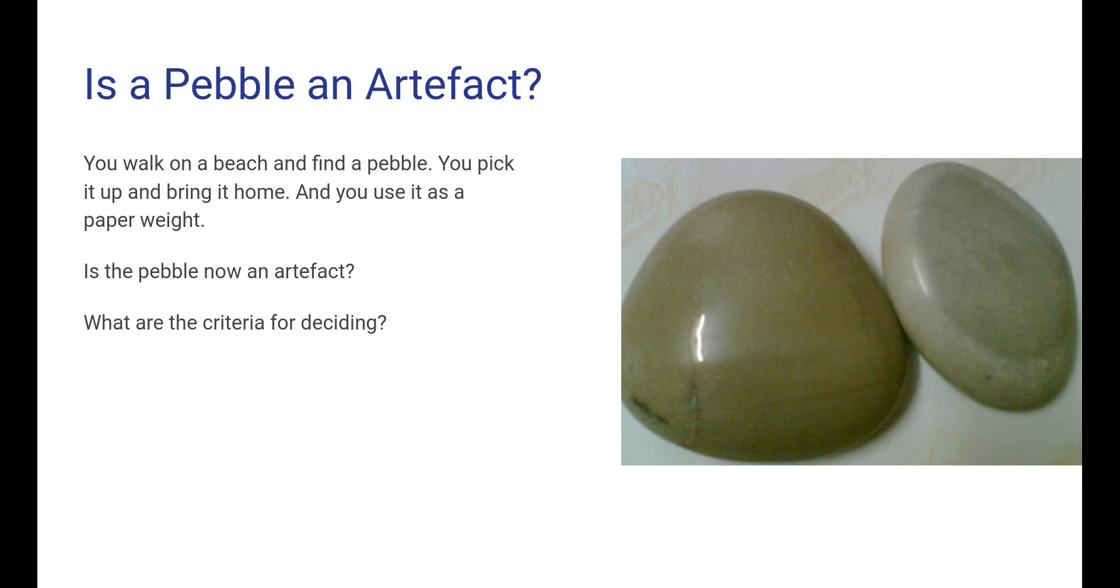Another example here: is a pebble an artifact? Suppose that you walk around on a beach and there you see a nice pebble. You pick it up and you bring it home to you, and then you use it as a paperweight. Well, does this mean that the pebble now has become an artifact, or is it rather a natural object? What are the criteria for deciding? And as this example illustrates, there isn't sometimes a really sharp borderline or crisp borderline between the artificial and the natural. I mean, sometimes of course it's very clear where to put something. The tree is a natural object, a mobile phone is artificial. But these examples they indicate that sometimes it's not obvious. So please think about these examples.